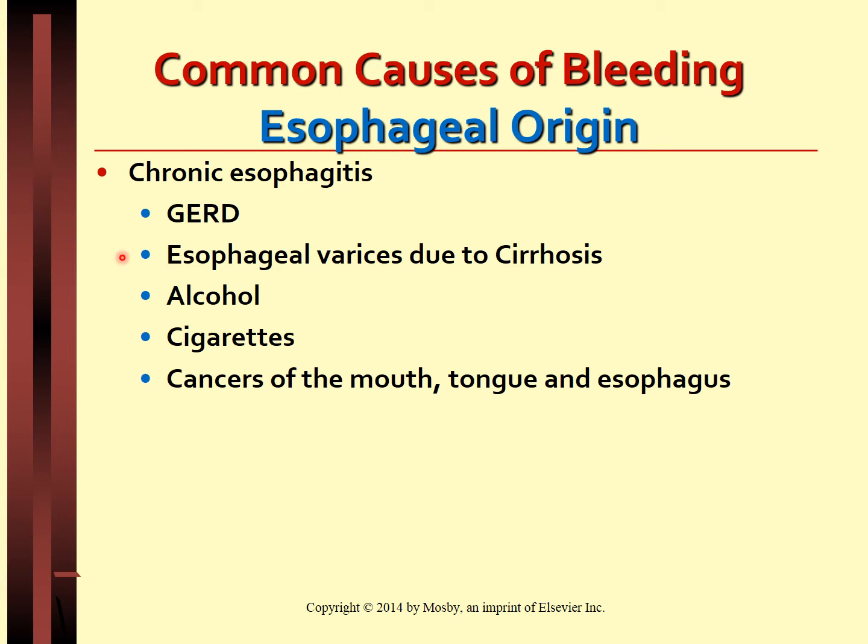Esophageal varices are thin-walled varicosities formed in the submucosa of the esophagus as a result of backflow of blood due to portal hypertension that occurs in cirrhosis of the liver. These are tortuous and can rupture, causing massive hemorrhage and even death.